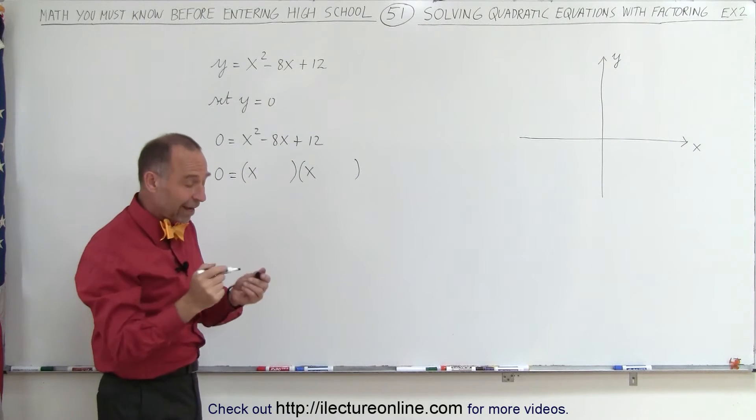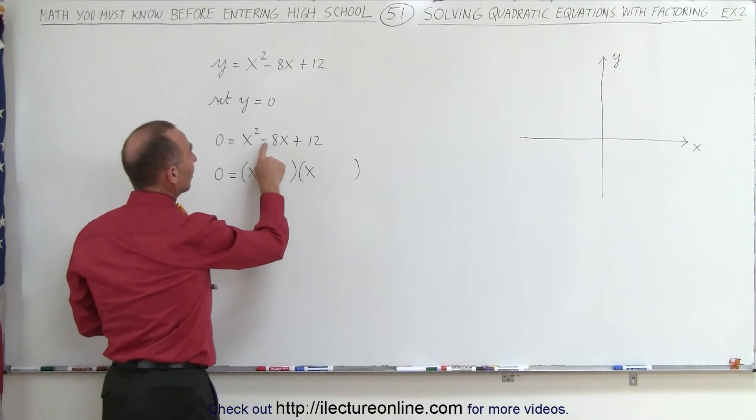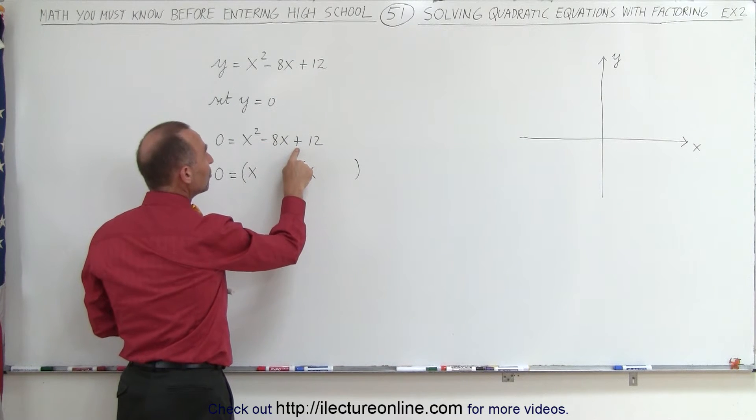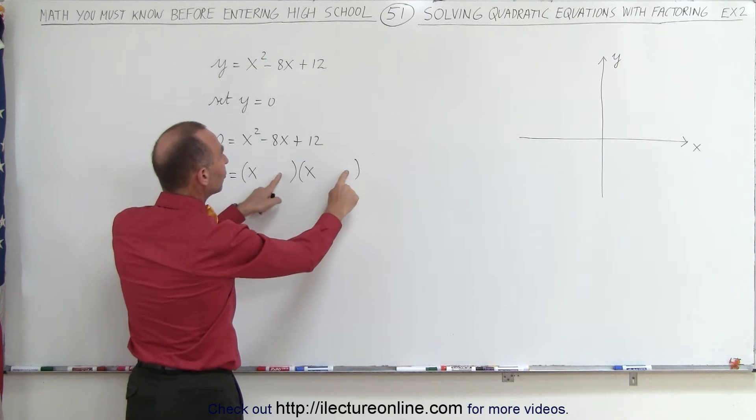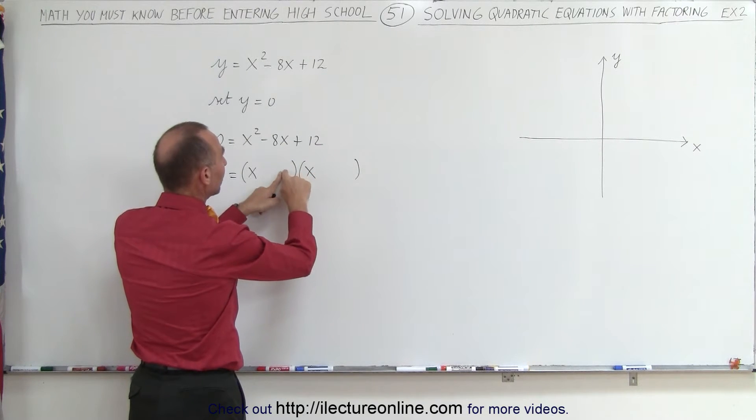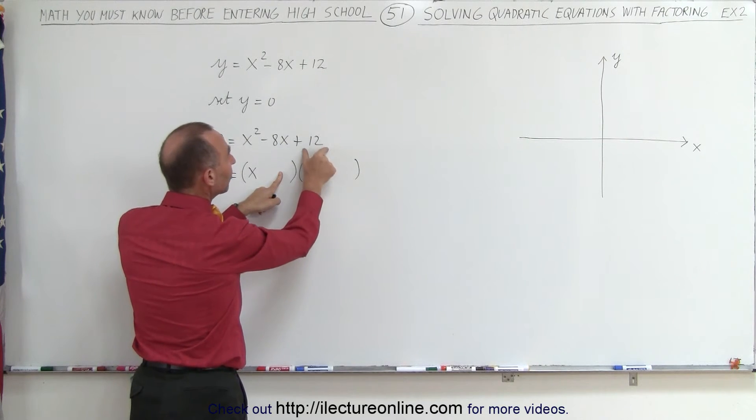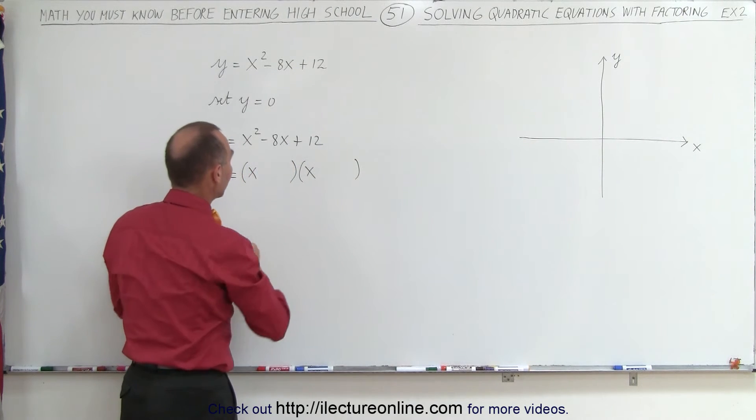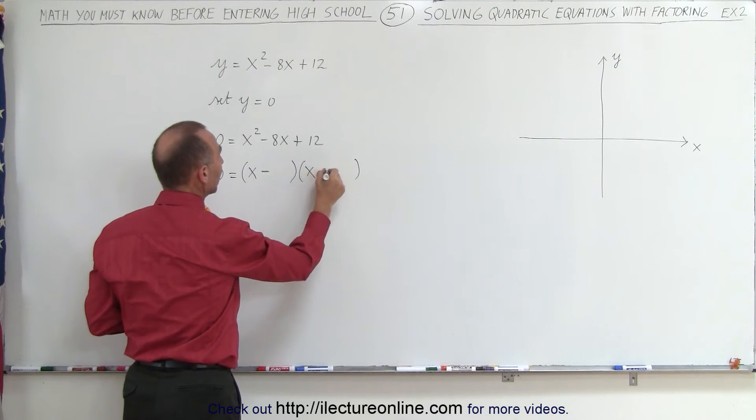And then, to get the signs correct, notice that this is a negative, and that's a positive, which means the only way to get a negative here and a positive there is for both of these numbers to be negative, because when you multiply a negative times a negative, you get a positive, and when you add them together, you get a negative. So, the signs must be negative and negative.